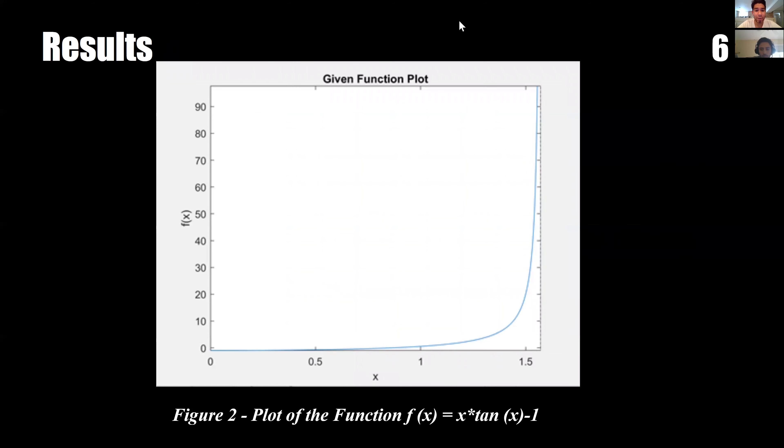In figure number 2, we have plotted the function x times tangent of x minus 1 within the range we decided to use for this method. This range goes from 0 to pi over 2, which is why we only see a portion of the curve and not the entire function as it would be seen if we were to plot it for a larger domain.